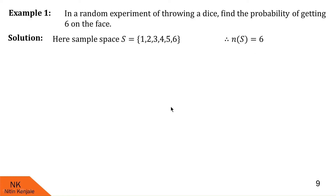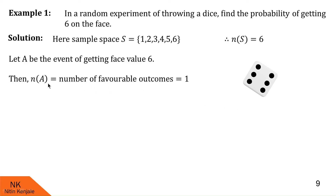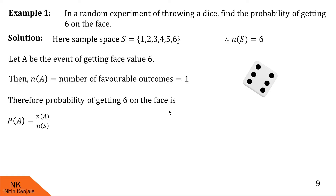Next, we define the event whose probability we want to find. We are asked to find the probability of getting 6 on the face, so let event A be getting 6 on the face. There is only one outcome — the number 6 — favoring this event. So N of A equals 1. Therefore, probability of A equals N of A upon N of S, which is 1 upon 6. So the probability of getting 6 on the face when a fair die is thrown is 1 by 6.